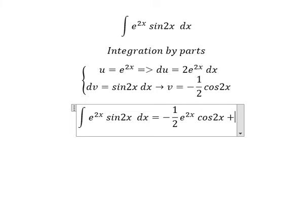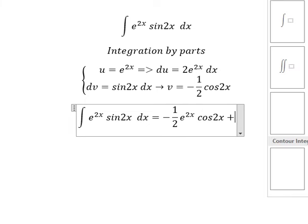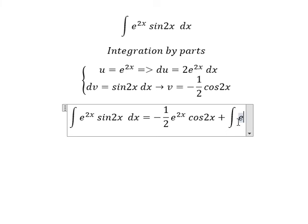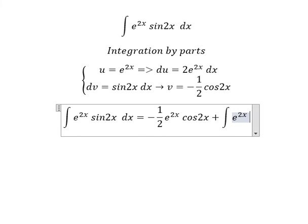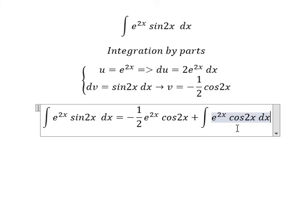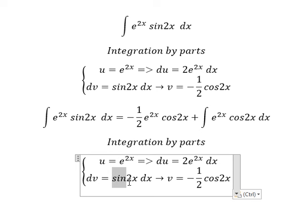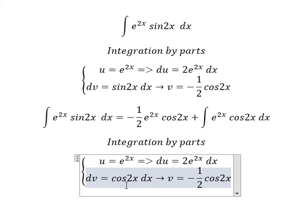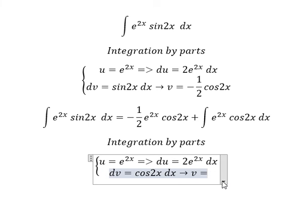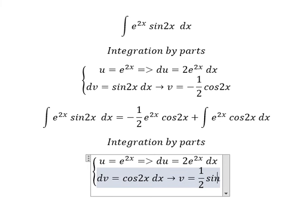And we have the integral e to the power of 2x cos 2x dx. Next we use the same technique, but now we change cos 2x. The integration of cos 2x, we will have v = 1 over 2 sin 2x.